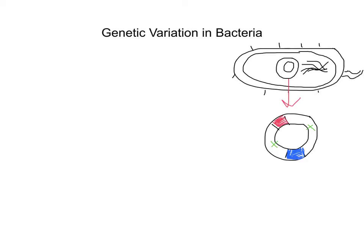So genetic variation in bacteria is really important to understand, and certainly at Key Stage 4 when you look at MRSA — methicillin-resistant Staphylococcus aureus — you talk about bacteria that have become resistant to drugs through developing mutations and passing them on.